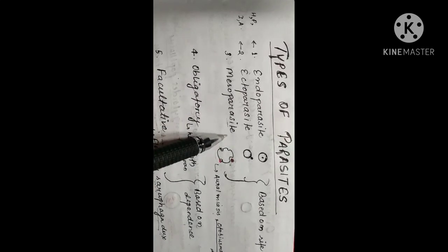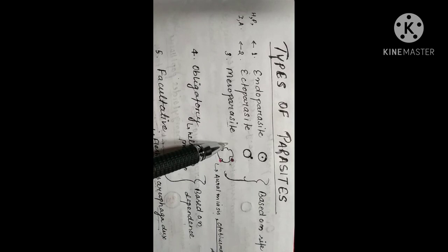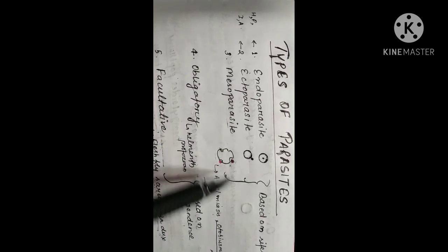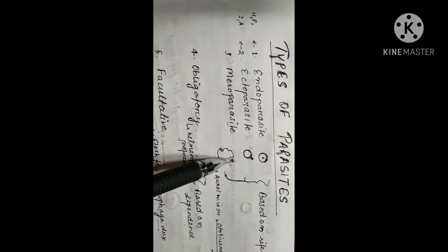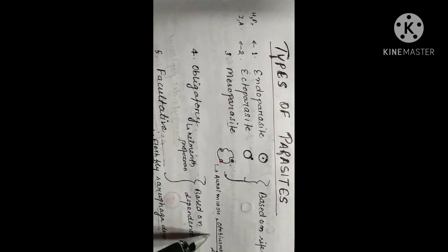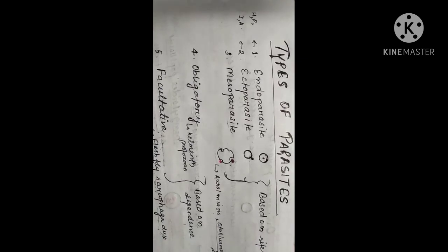The next is mesoparasite. Mesoparasites are those parasites which reside in the external orifices and openings of a host, like ears and nose. They are found in the openings of a host's body. For example, oral myiasis, which is caused by Autobius magnoni, and this Autobius magnoni is present in dog ears.